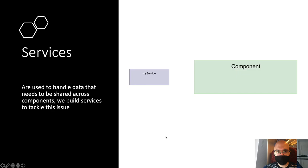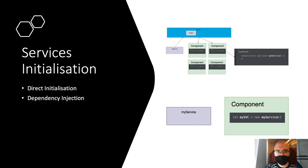We can use services to share data across different components, make API calls, do logging, and more. There are two ways to initialize services: direct initialization and dependency injection. Direct initialization means from within the component we directly initialize the service, but this is not recommended because the data is only available to that component specifically.